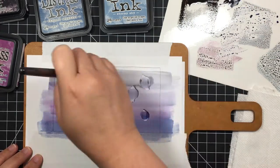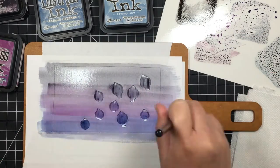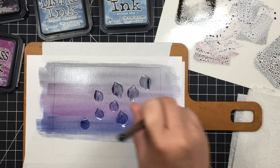So first I mask off what will become the water in my scene and then I lay down a layer of chipped sapphire at the bottom of the skyline. Next I blend in seedless preserves and black soot at the top. I use lots of water and really allow the colors to blend.